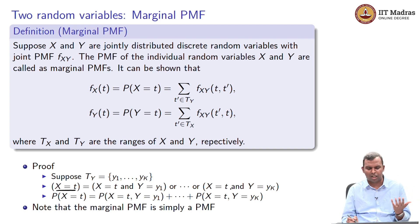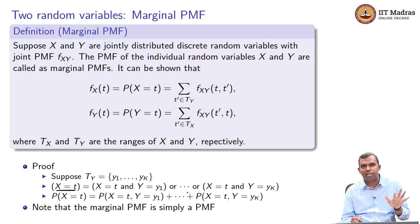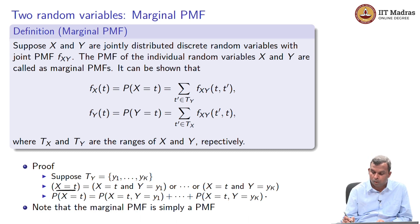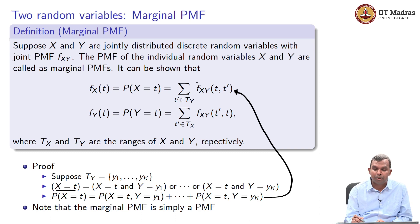Once you do this, the probability of X = t — and even though these are 'or' events, they are all disjoint because Y takes different values — so when you write P(X = t), it equals P(X = t, Y = y_1) + ... + P(X = t, Y = y_K). That is what is written in the equation: you sum over all values t' in the range of Y, the joint PMF f_{XY}(t, t'). You fix the value of X to t throughout, then take all possible values for Y and simply add the joint PMF at all possible values of Y with the same value of X.